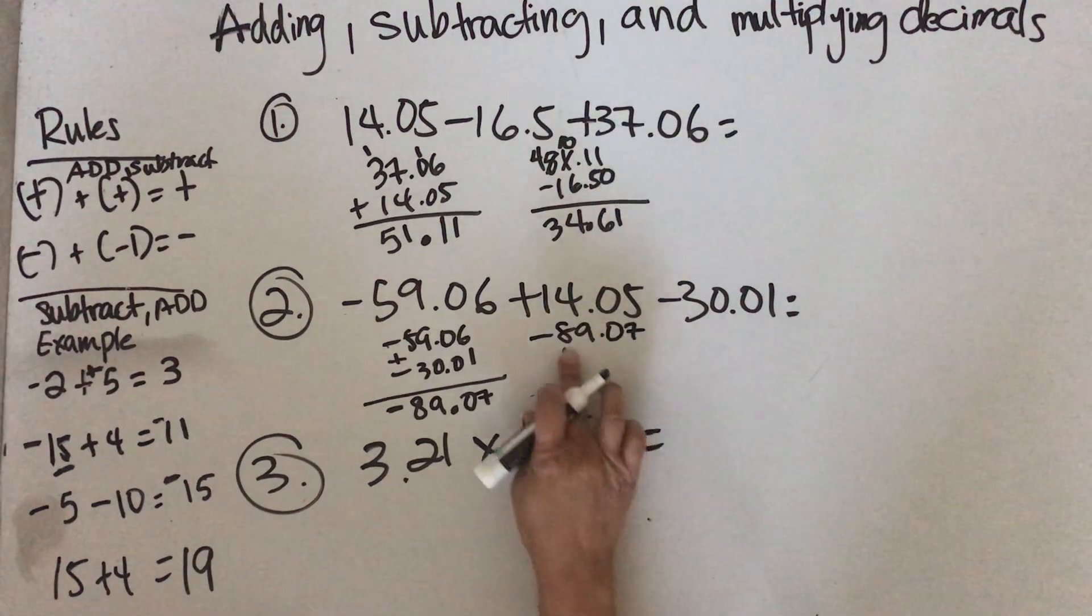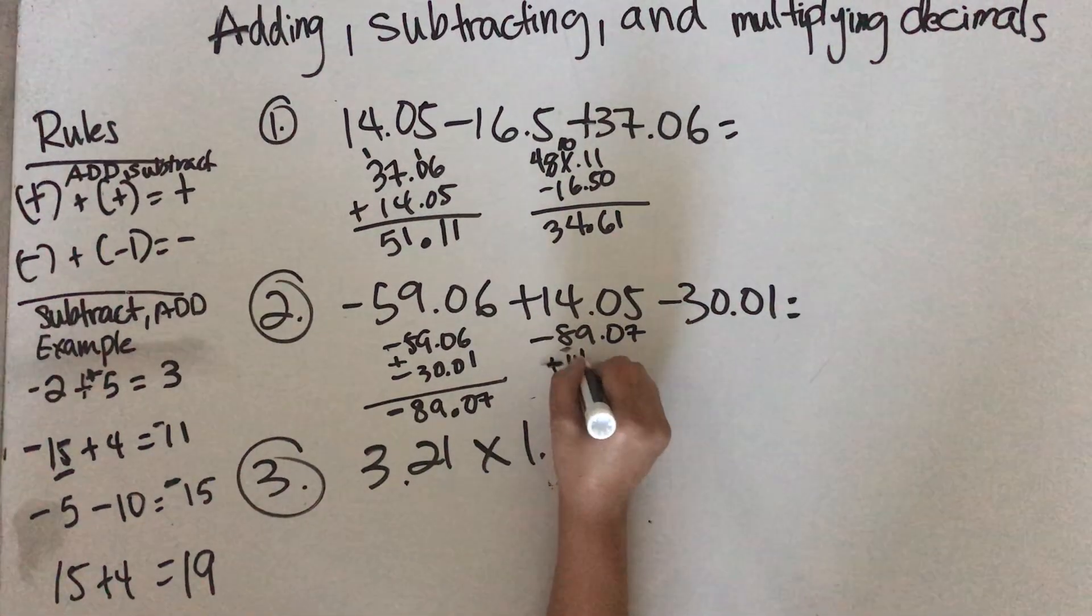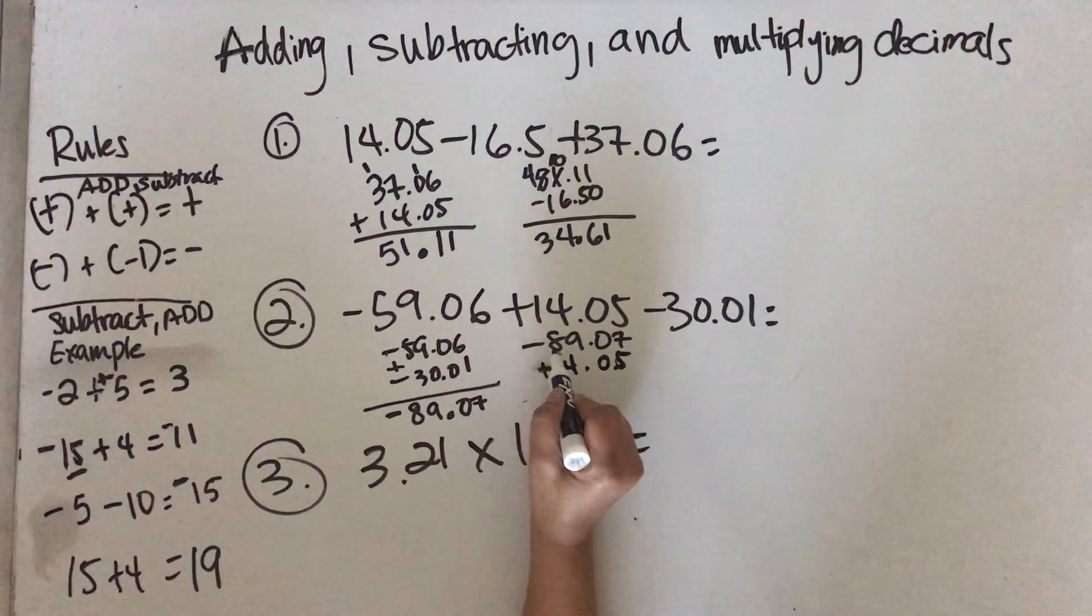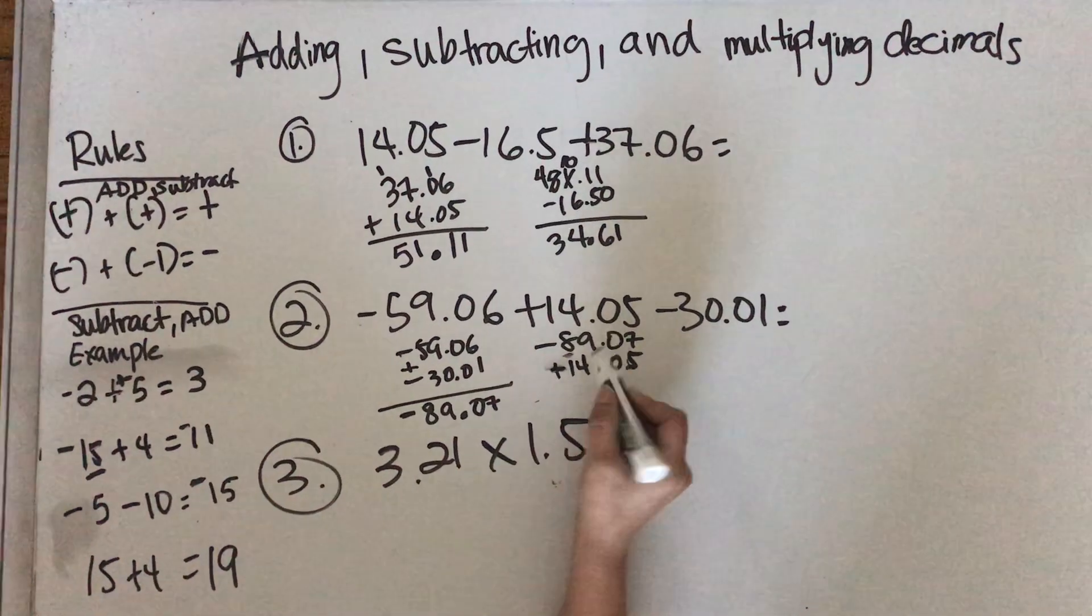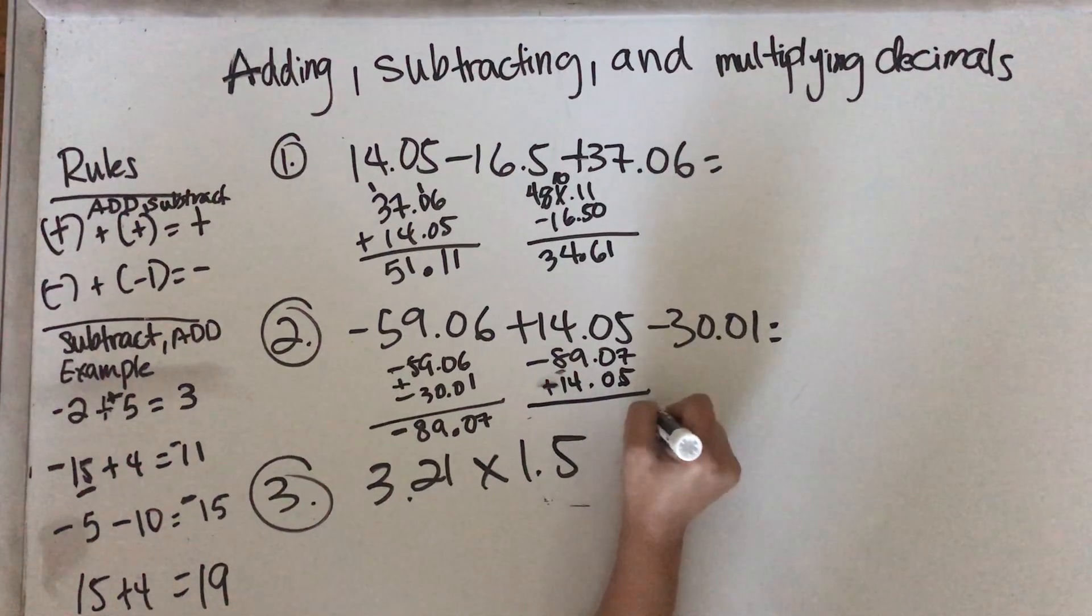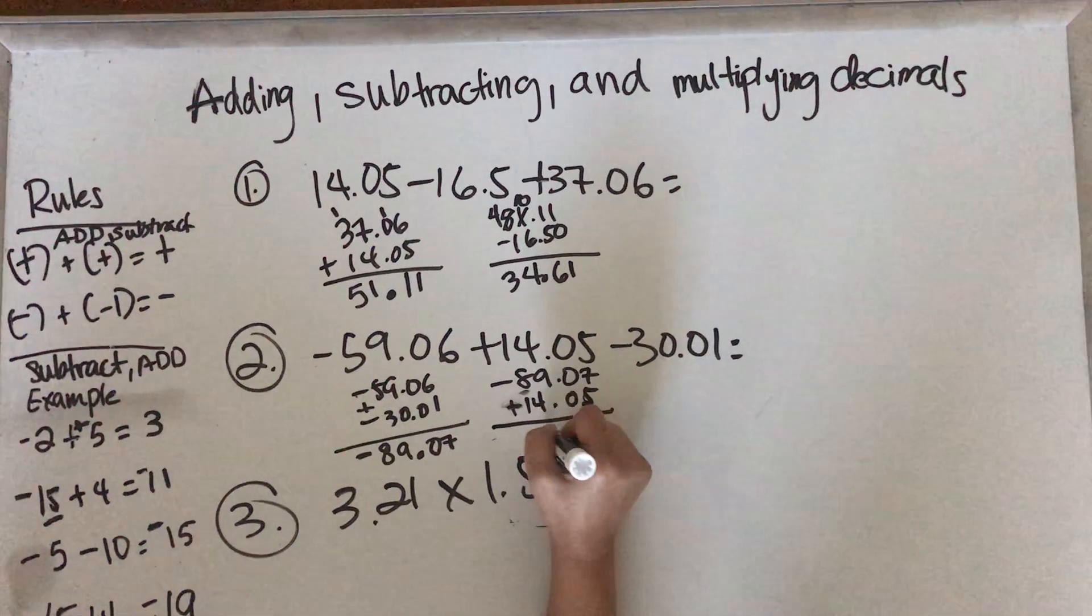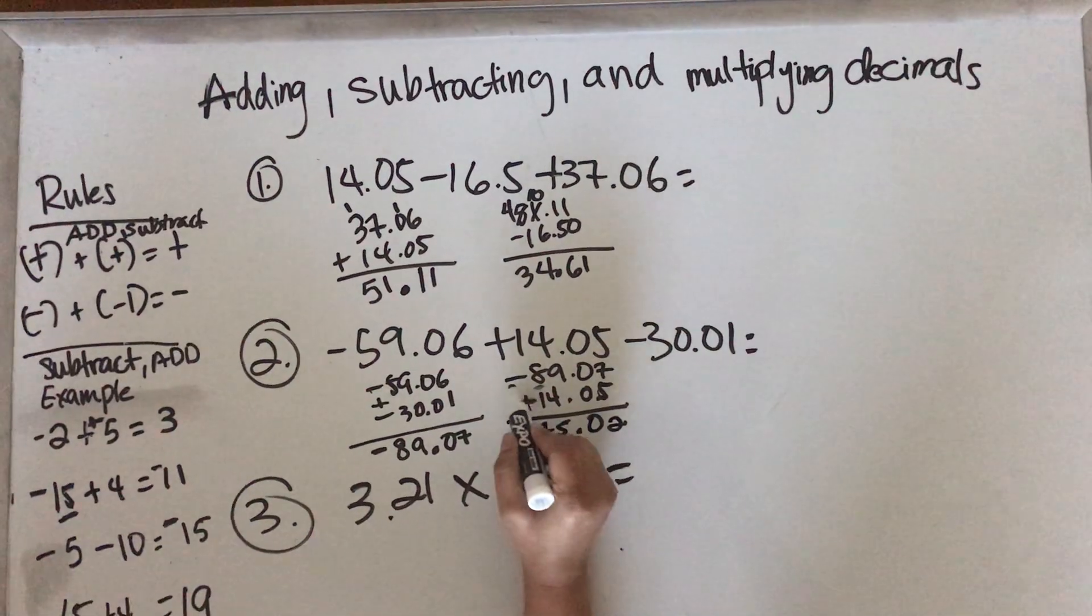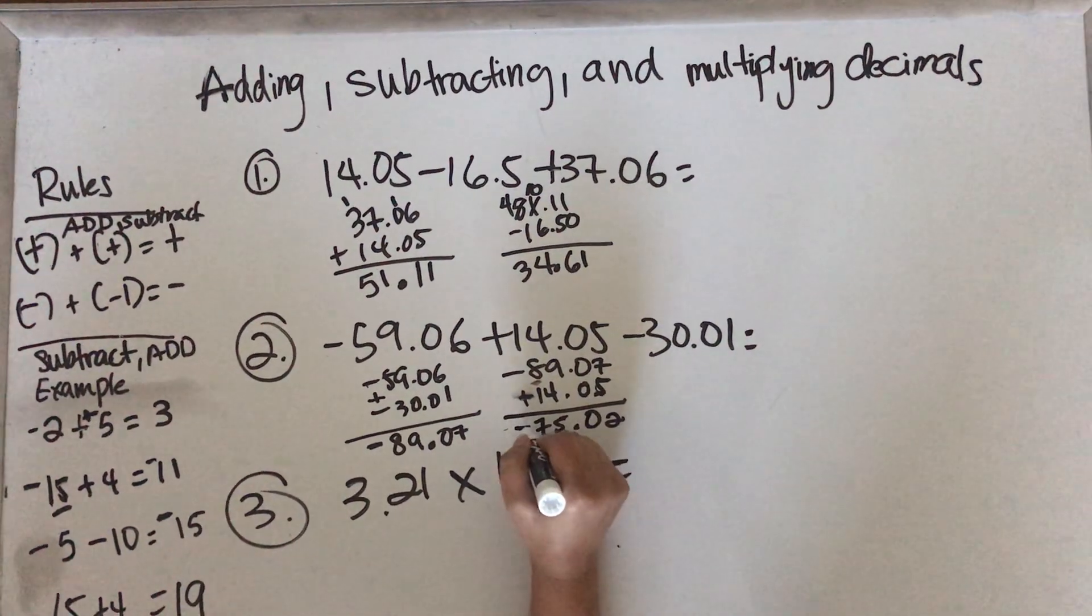Now take negative 89.07 and calculate with positive 14.05. When the highest number is negative and the lower number is positive, you're going to minus. 7 minus 5 is 2, 0 minus 0 is 0, align your decimal point, 9 minus 4 is 5, 8 minus 1 is 7. Since the highest number is negative, your answer should also be negative: negative 75.02.